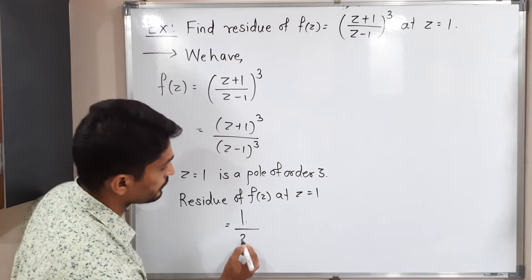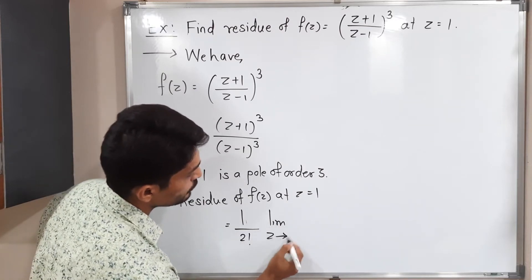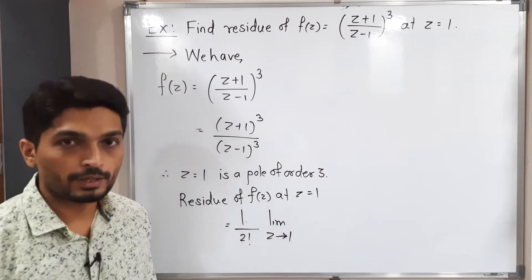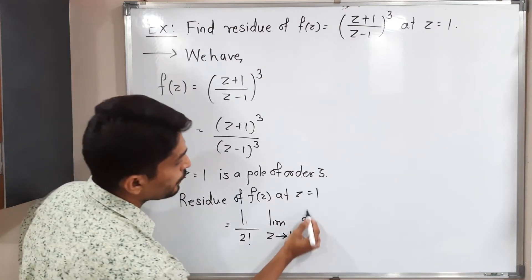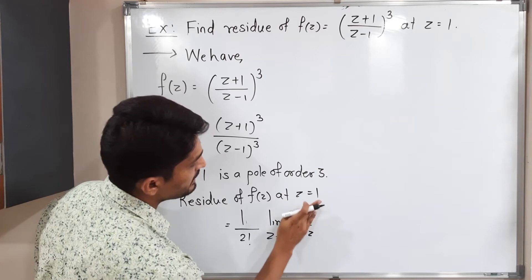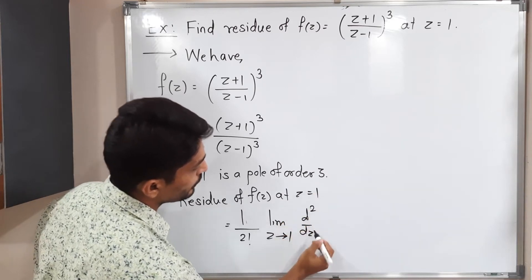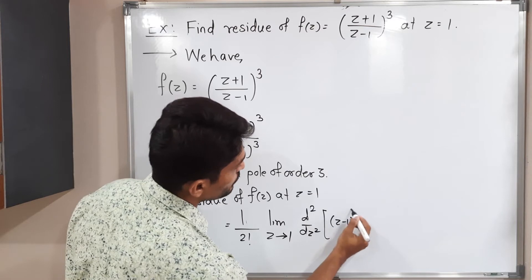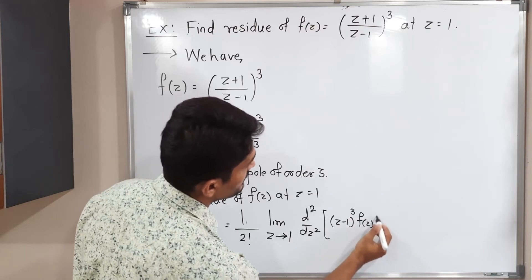I should write limit z tends to 1 since we are finding residue at z is equal to 1. We have to take derivative of order n minus 1. That means here n is 3, 3 minus 1 is 2.